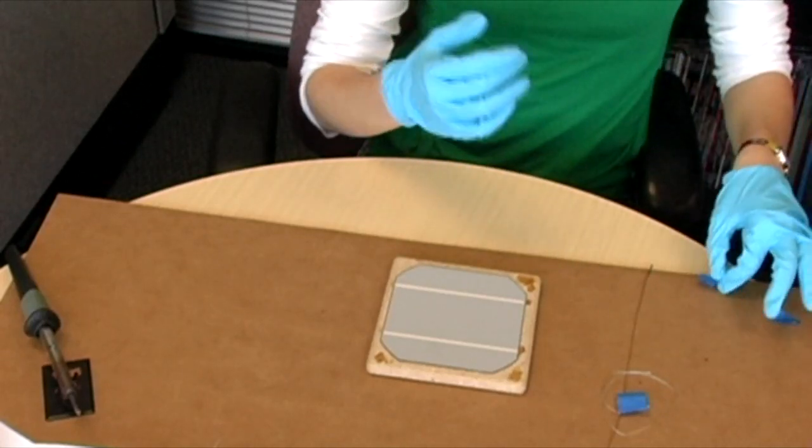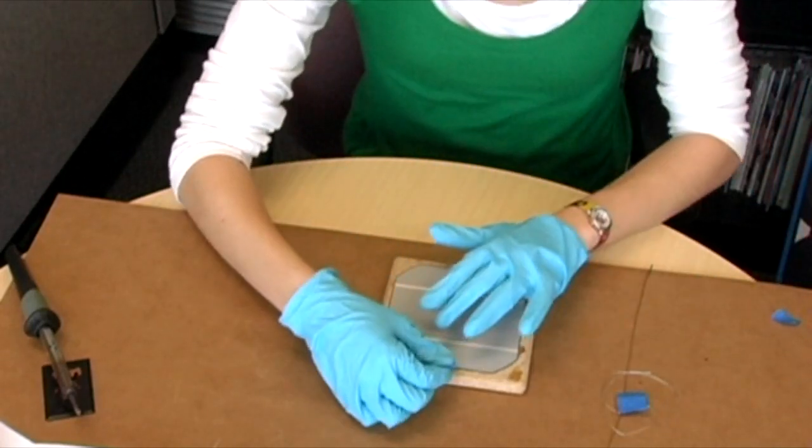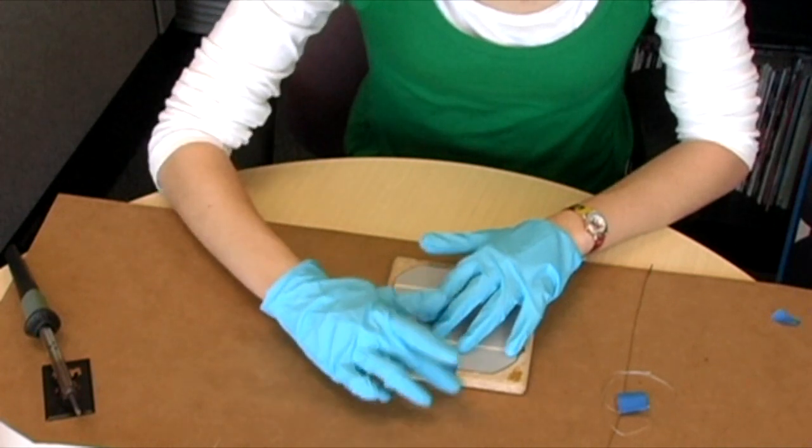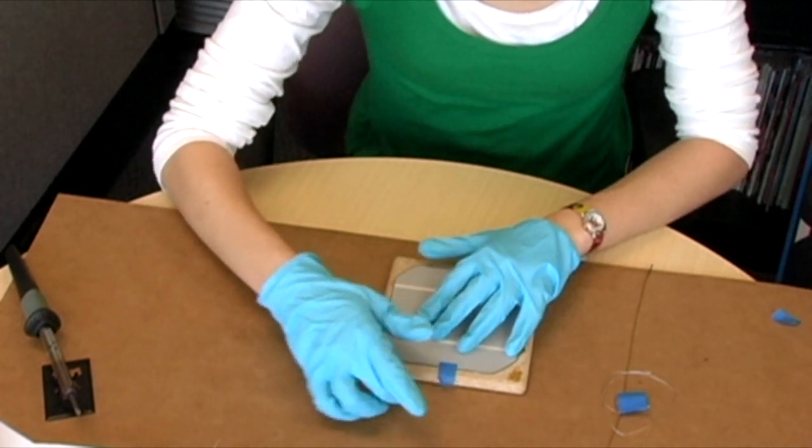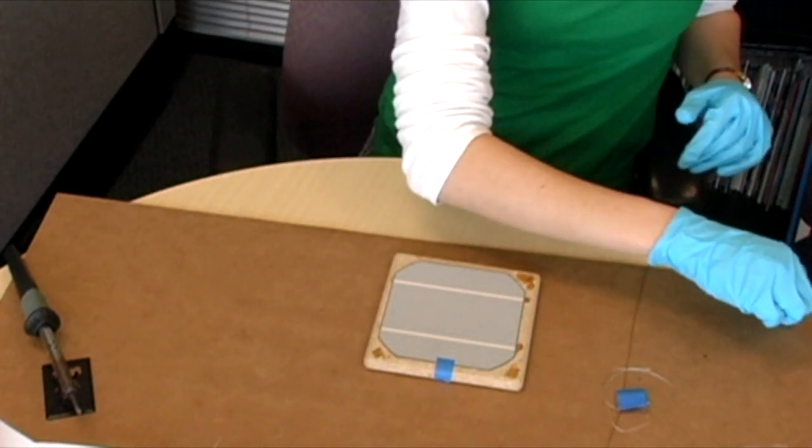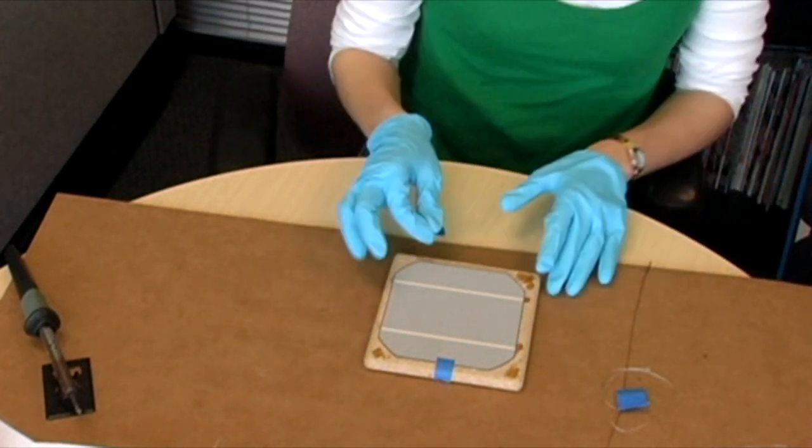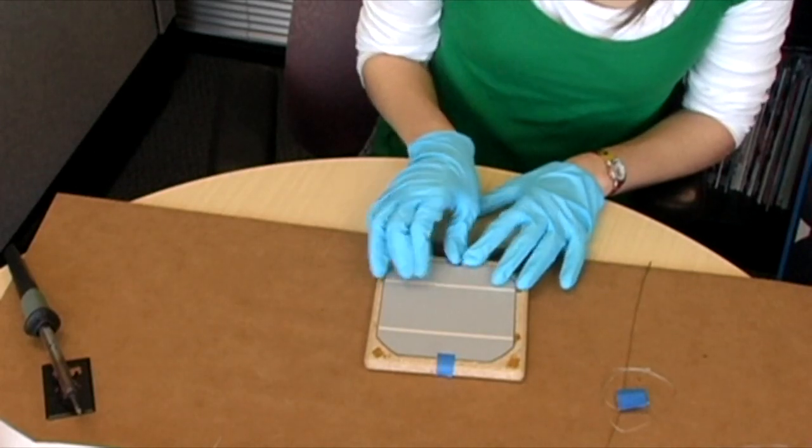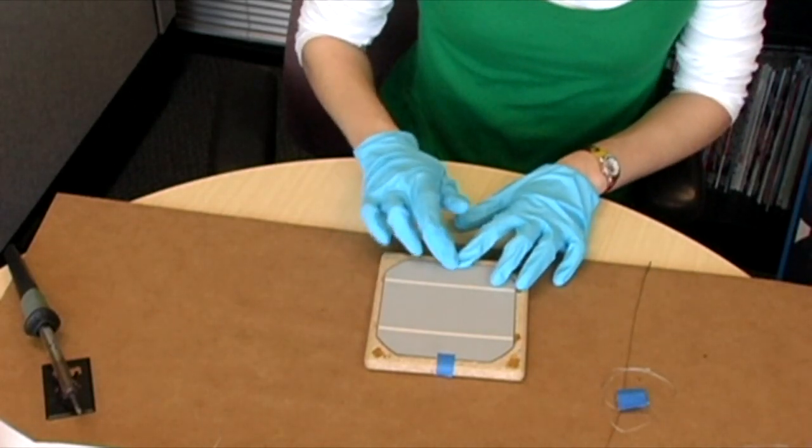Now we need to affix the cell to your cell workbench so it won't slide around during the pre-tabbing process. This should be done by placing two small pieces of easily removable masking tape about 10 millimeters from the edge of the solar cell, perpendicular to the two traces. This will allow the cell to naturally cup when we solder the tabbing wire.